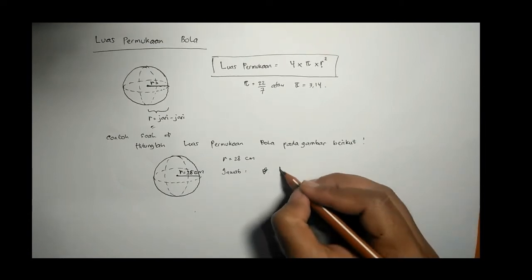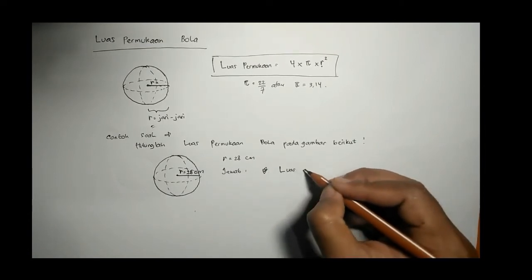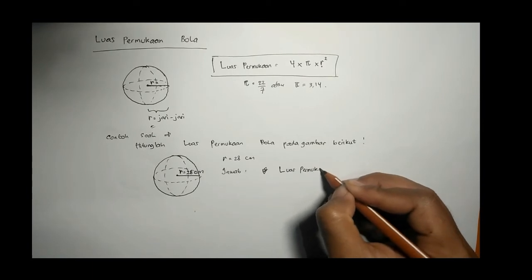Jadi ada gambar bola dengan keterangan R 28 cm, ditanyakan luas permukaan bola. Nah maka jawab, kita tuliskan rumusnya. Diingat-ingat ya, rumus luas permukaan bola yaitu 4 dikali π R kuadrat.